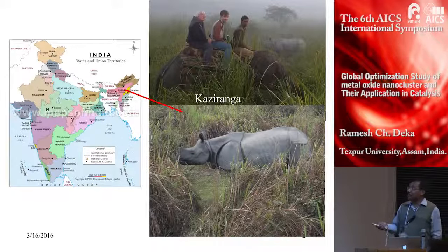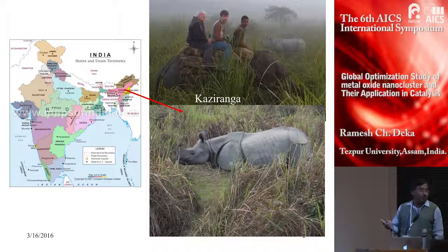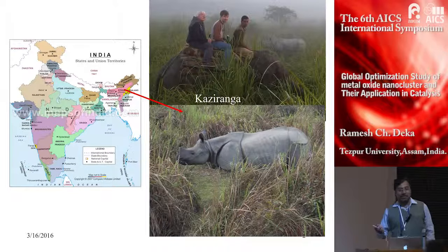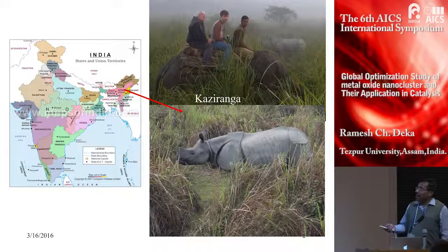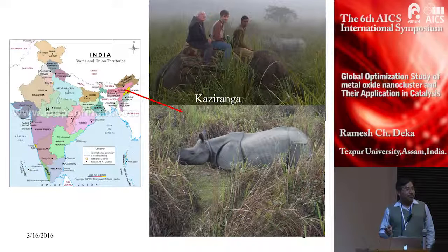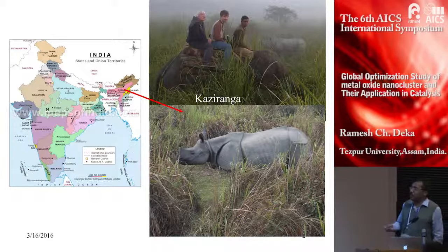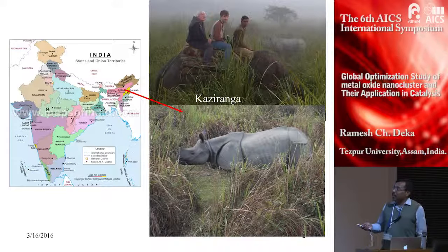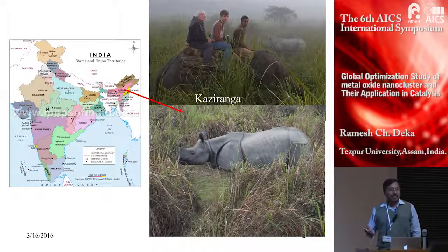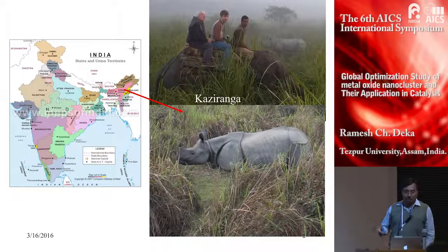People are asking where is Assam. This is the map of India — Delhi is somewhere here, and Assam is in the extreme northeast. Assam is famous for tea; 55% of all tea is produced there. We also have Kaziranga National Park, famous for the one-horned rhino. In 1974 there were only 14 rhinos, but with government preservation plans they have grown to about 2500. The park is only 60 kilometers from my university, so I visit every year and take visitors there.